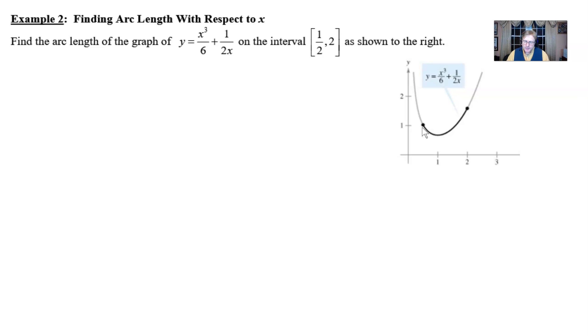So we have an arc length with respect to x apparently by the title of the problem. Find the arc length of the graph of y equals x cubed over six plus one over two x on the interval one half to two as shown in the right. And we have this wonderful curve that we can relate to and our job is to figure out how far is it between these two points along the curve. That's basically it.